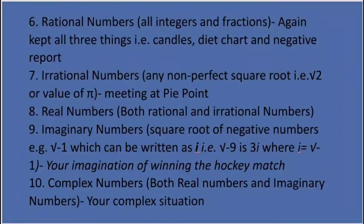Rational numbers are represented by keeping all three things — candles, diet chart, and report — in the bag. Irrational numbers are any non-perfect square numbers like root 2 or the value of pi — your friend at Pi Point with an axe and the snowman-shaped bag are your clues. Real numbers include both rational and irrational numbers. Imaginary numbers are the square root of negative numbers — your imagination of winning the hockey match is the image clue for imaginary numbers.